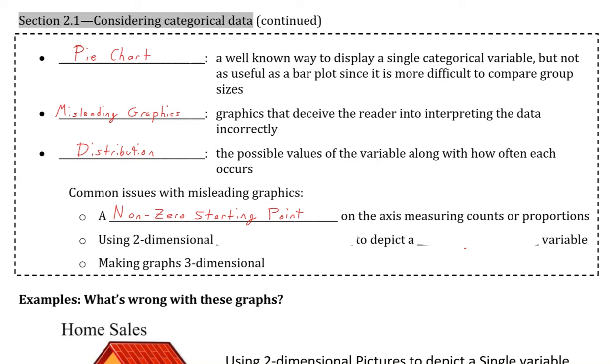Secondly, we have using two-dimensional pictures to depict a single variable. This is a common issue because you can attempt to make a graphic more visually appealing by converting bars into pictures. This is fine as long as you only have them differ in one dimension, not two or more.